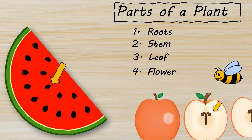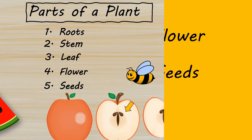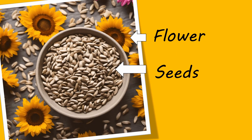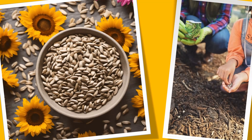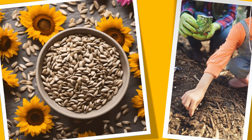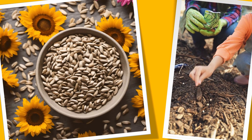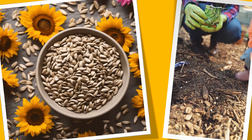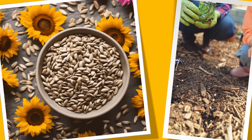Another main part of plants are seeds. The seed protects the baby plant inside, and also provides it with food while the baby plant is still small. A seed can be as small as a speck of dust or as big as a walnut, depending on the plant. When you plant a seed in soil and give it water and light, it starts to grow into a new plant.